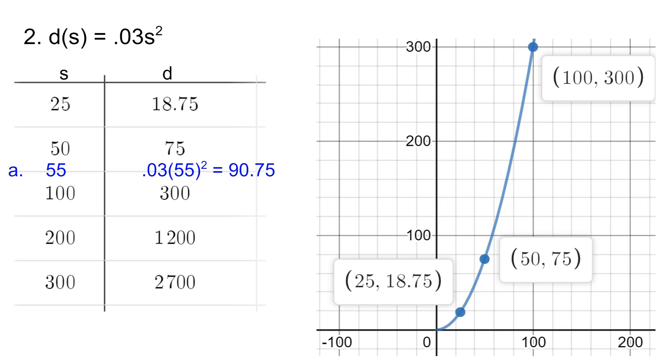So question A asks us to determine how many feet we would need if the car in front of us was traveling 55 miles per hour. So at 55 miles per hour the stopping distance we would need between us and the car in front of us is 90.75 feet, and that is assuming they somehow instantly stopped.